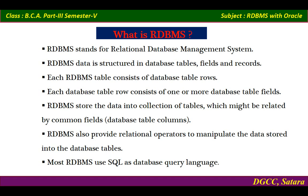A Relational Database Management System (RDBMS) structures data in database tables, fields, and records. Each database table consists of rows and columns, and each row consists of one or more fields. RDBMS stores data in a collection of tables which must be related by common fields, that is, database table columns.